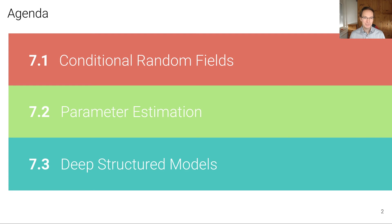This lecture is structured into three units. In the first unit we're going to introduce the terminology of conditional random fields, which is crucial for learning. In the second unit we're going to discuss the actual learning problem, first in a simple setting where the parameters appear linearly or log-linearly and where learning is a convex problem. In the final unit we're going to talk about deep structured models where the parameters appear non-linearly.